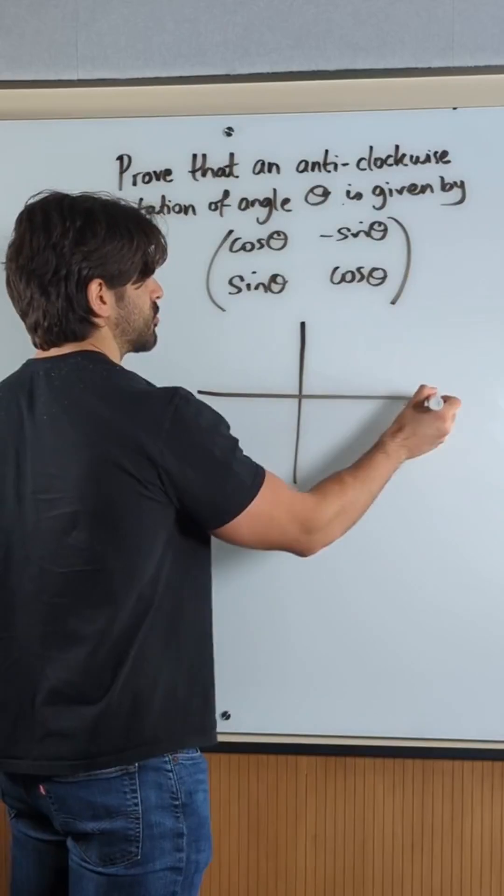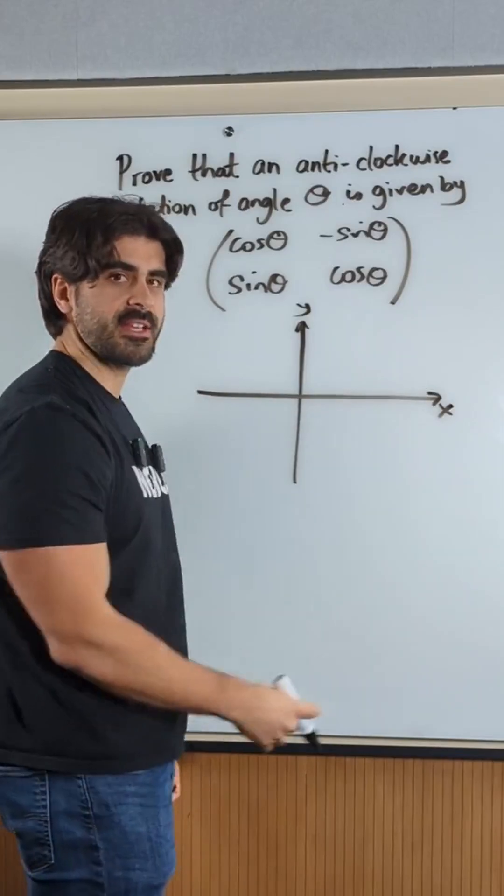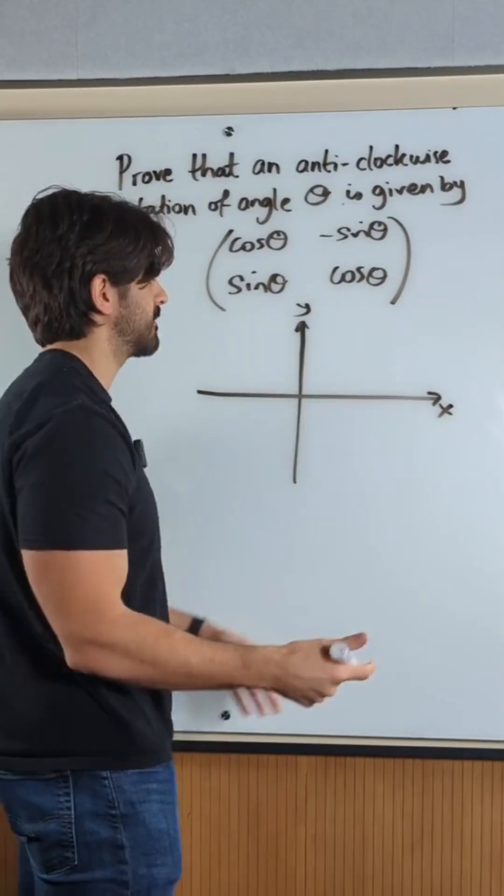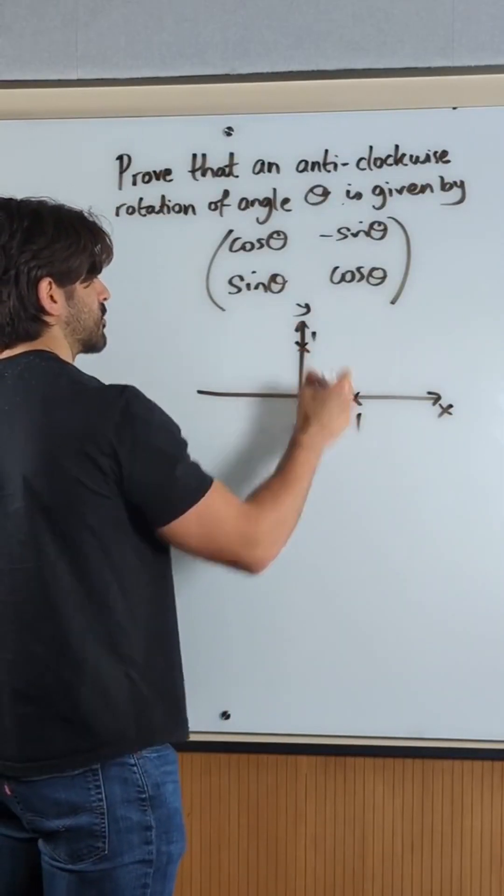The identity matrix looks at the x and y axis. What makes up the x axis? It is multiples of the unit x value, 1. So you look at 1, and for the y axis it's also 1.